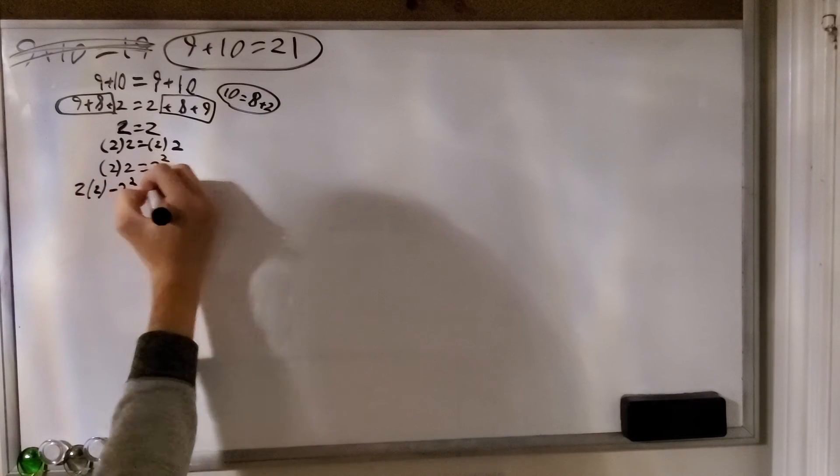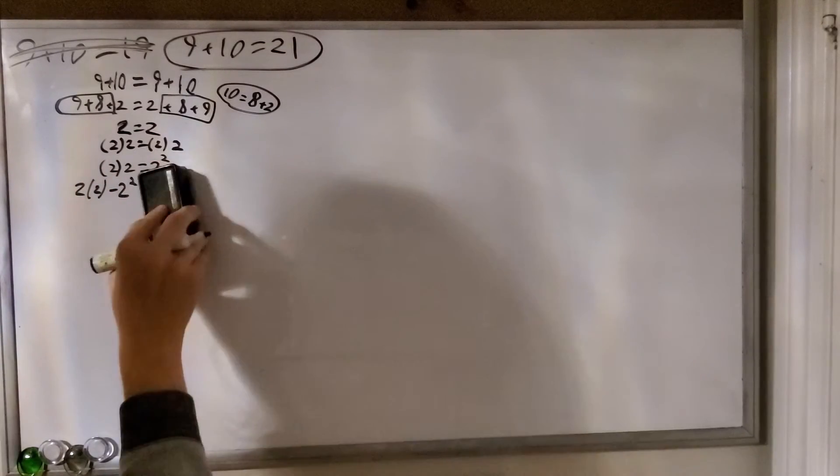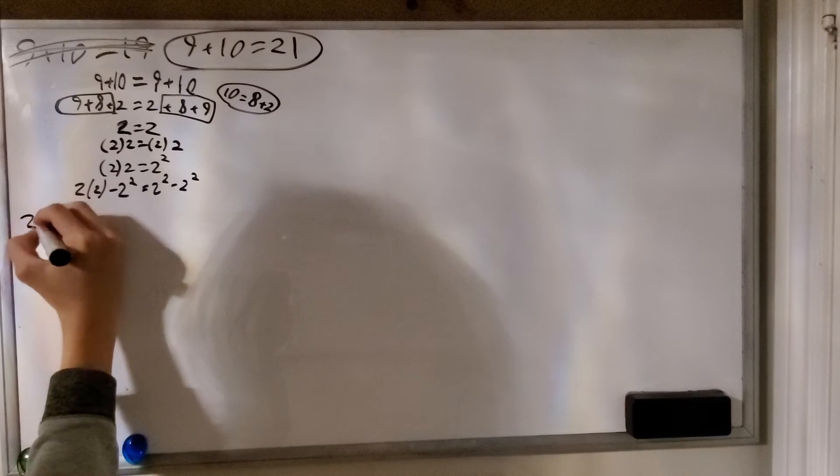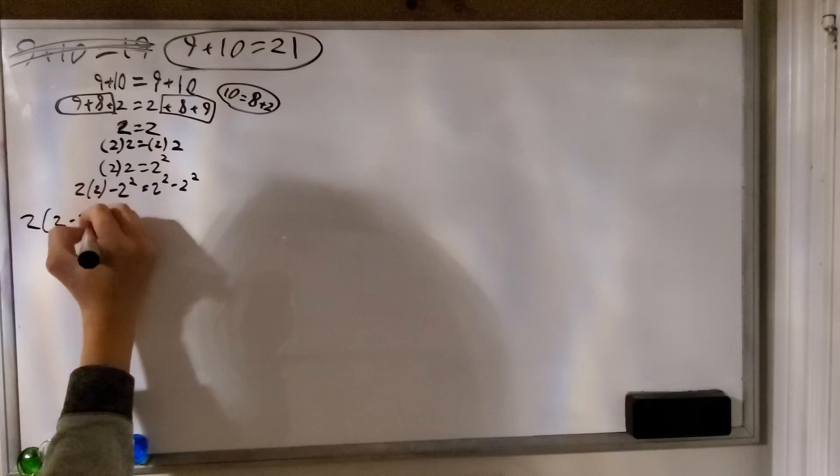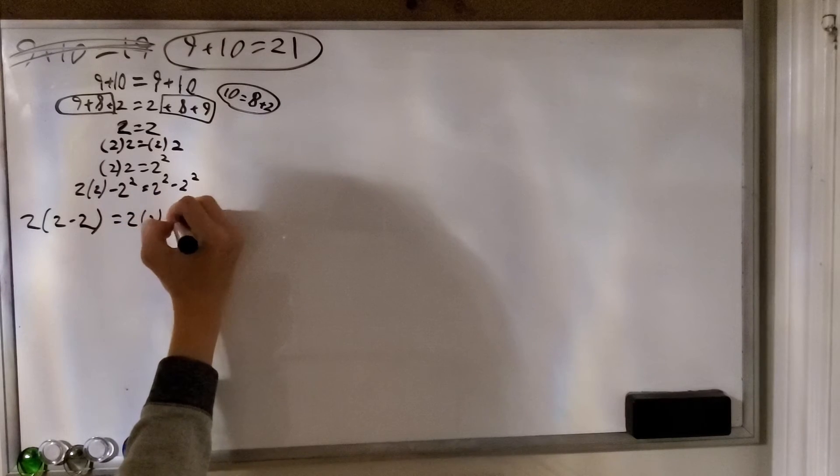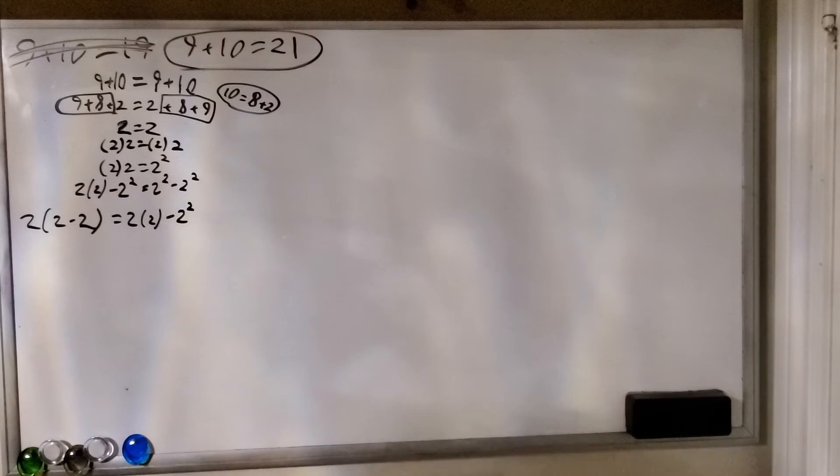Now let's subtract 2 to the power of 2 from both sides. As you can see, the equality is still true. Now let's factor out the 2 from the left side. If you don't know what factoring is, all you need to know is that 2 times 2 minus 2 is equal to 2 times 2 minus 2 to the power of 2. If you don't believe me, again, check on your calculator.